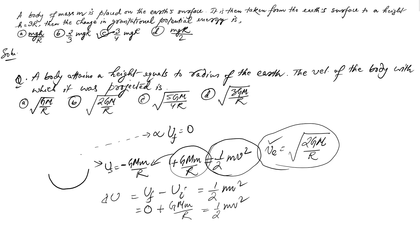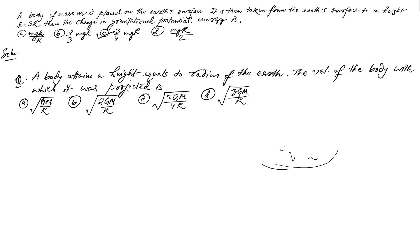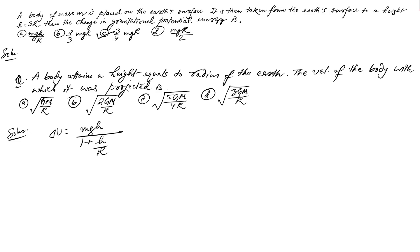To find the throwing velocity for our problem, find the change in potential energy and equate it with half mv². Using the trick formula ΔU = mgh/(1 + h/R) skips the step of finding U1 and U2 separately. Equating with half mv² and cancelling m gives v equals the square root of 2gh/(1 + h/R).